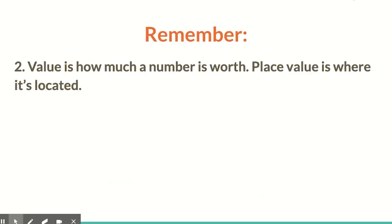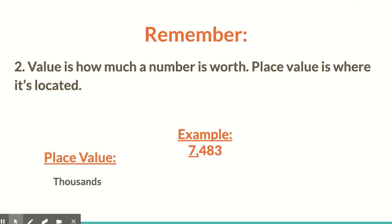Two: as we stated before, value is how much a number is worth, where place value is where that number is located. So another example — if we have 7,483 and we look at the 7, the place value of that 7 is in the thousands place. If we asked the value, it is 7,000, because we have 7 thousands.